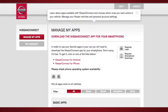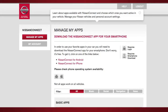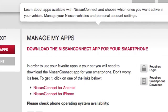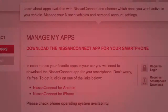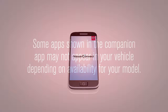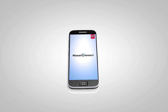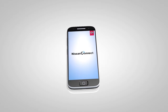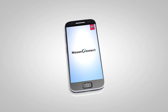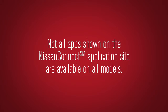You can select which apps you want activated in the vehicle from the Nissan Connect mobile apps companion app by selecting Manage My Apps. Some apps shown in the companion app may not appear in your vehicle depending on availability for your model. Some applications require you to have the app downloaded and installed on your phone, while others require you to enter your username and password to log in.